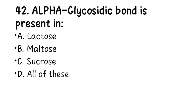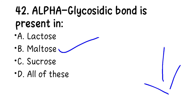Number 42. Alpha glycosidic bond is present in: A. Lactose, B. Maltose, C. Sucrose, D. All of the above. The glycosidic bond is the bond that holds carbohydrate molecules together. The right answer is B, maltose — maltose has the alpha glycosidic bond.